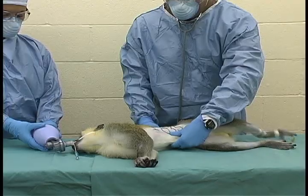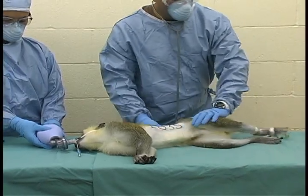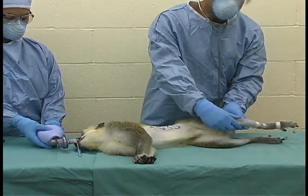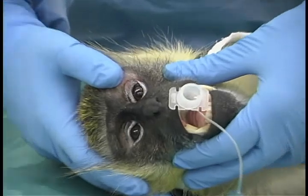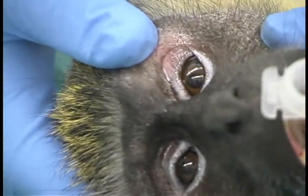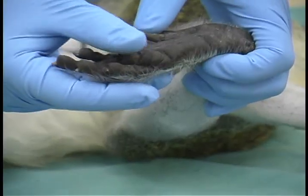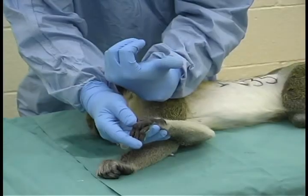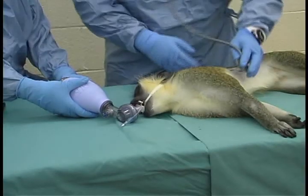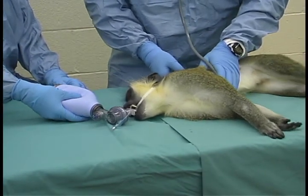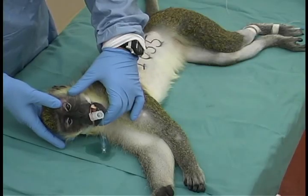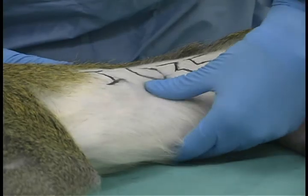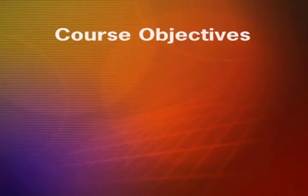The nerve agent simulation laboratory provides you the opportunity to observe firsthand the continuum of events during a cholinergic crisis. It is very important that you become involved to receive the full training effect of this exercise. This is a once-in-a-lifetime opportunity which will allow you to see, monitor, support, and resuscitate a simulated nerve agent casualty in a safe and controlled environment. This practical hands-on exercise will enhance your understanding of the course material. There are several objectives that will allow us to accomplish this goal.